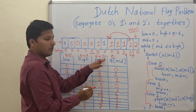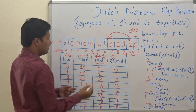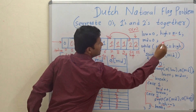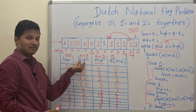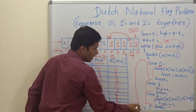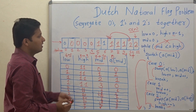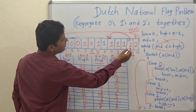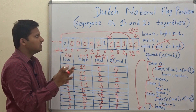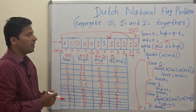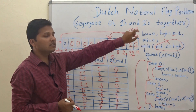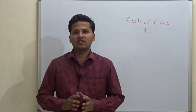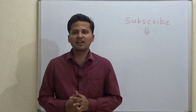Mid is now ten and high is nine, so the condition mid <= high is not satisfied. The loop stops. The array is now segregated: zero zero zero zero zero zero one one one one one two two — all elements are together. This is how we perform the Dutch National Flag algorithm in the most efficient way, with O(n) time complexity. Please subscribe to my channel as I post algorithm videos every day, and if you want a video on any particular topic, mention it in the comments below. Thank you.